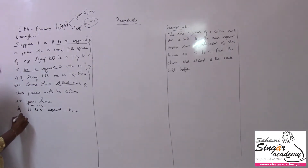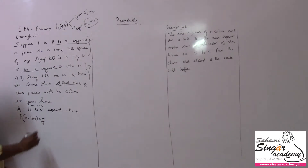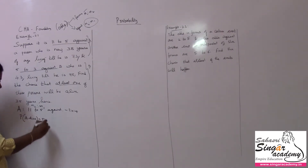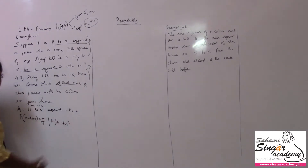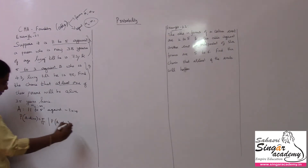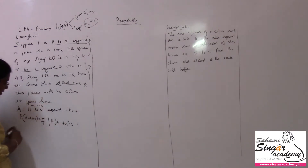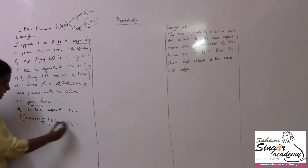So P(A alive) is 5 by 16 — since 11 to 5 against living means the favorable count for living is 5, and total is 11 + 5 = 16. P(A not alive), meaning A dies, is 11 by 16.